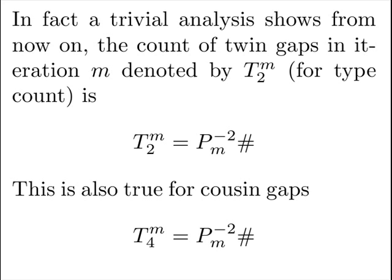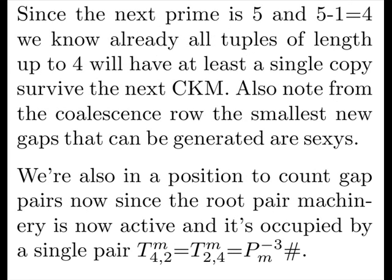The second minor primorial is counting individual gap slots on the machine of the expansion coalescence S model. Twins just happen to fill that first slot, as do cousins. Since the next prime is 5, and 5 minus 1 is 4, we know already all tuples of length up to 4 will have at least a single copy survive into the next model. Also note from coalescence, the next smallest new gaps that can be generated are sexes, as we said.